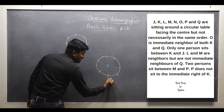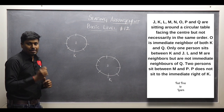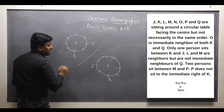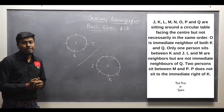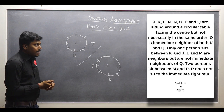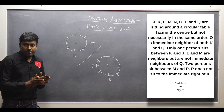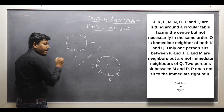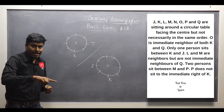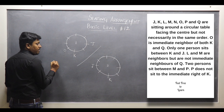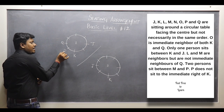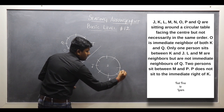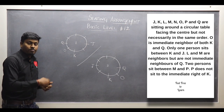According to point 2, between K and J there is one person sitting, so J is fixed in each possible diagram accordingly. Now applying point 1: O must be an immediate neighbor of both K and Q. If I fix O on the other side of K, O would only neighbor K. So I must fix O between K and Q, and place Q next — only then O is an immediate neighbor of both K and Q. This applies to both possible diagrams.